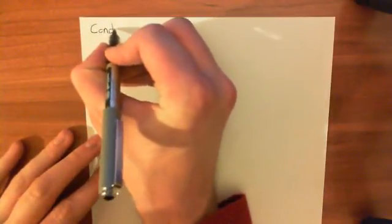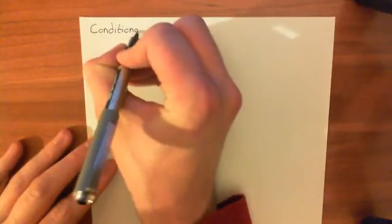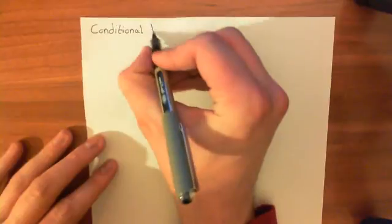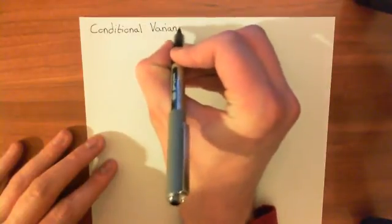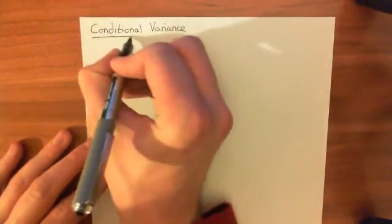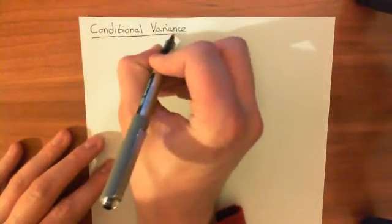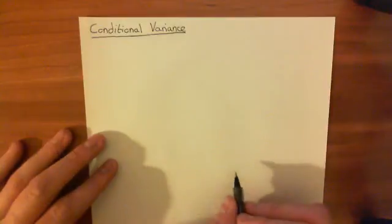Welcome to this next video in the Theory of Probability playlist. Now that we've done a basic introduction of conditional variance, what we're going to look at is, just as in the case of conditional expectation, where instead of conditioning on a simple event in a discrete probability space, what you can now condition on is the value of a random variable. We're going to look at conditional variance where we condition on the value of a random variable.